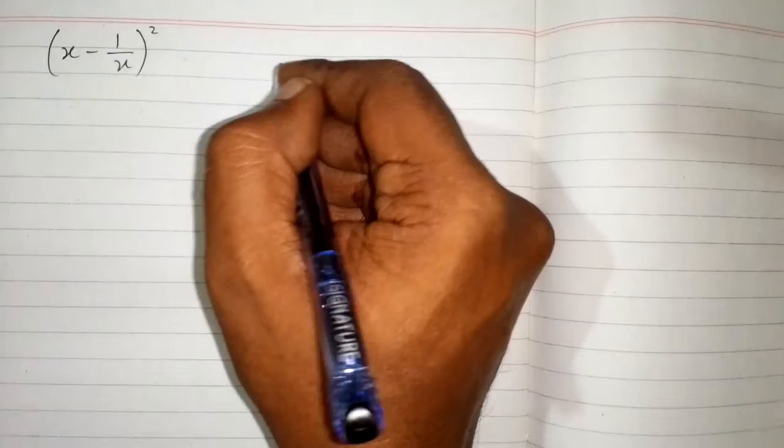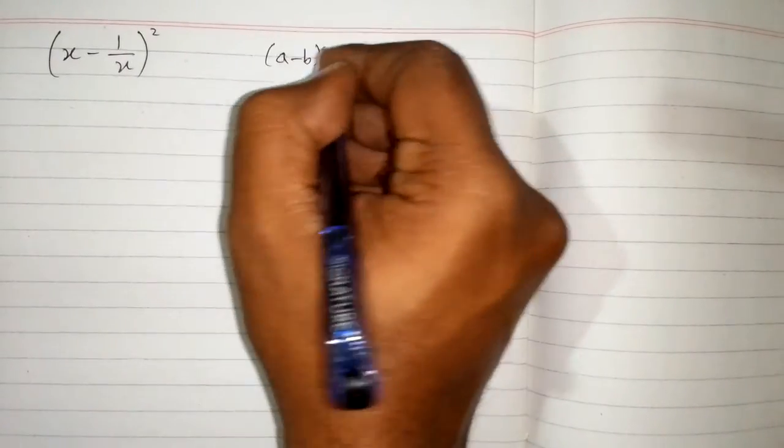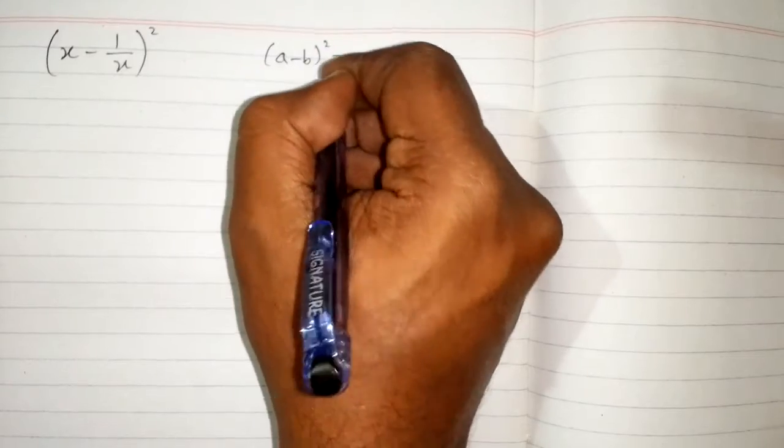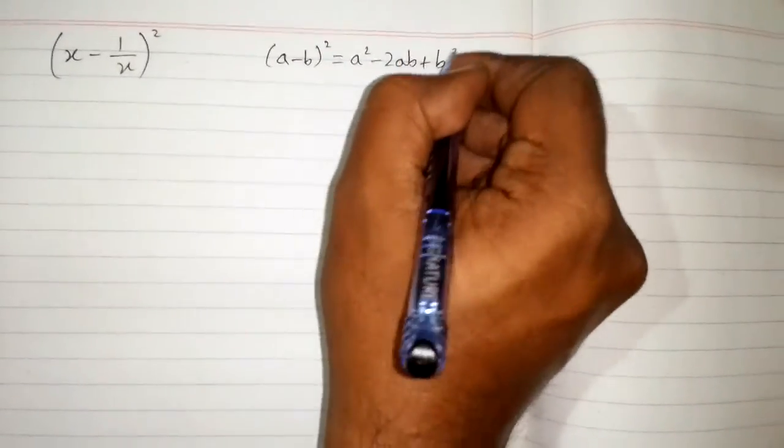In this video we will find the square of x minus 1 upon x. So we will use an algebraic identity which is a minus b whole square is equal to a square minus 2ab plus b square.